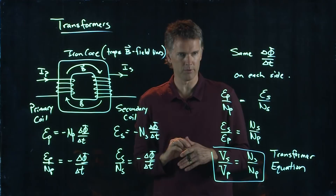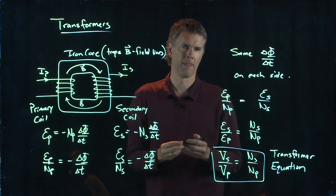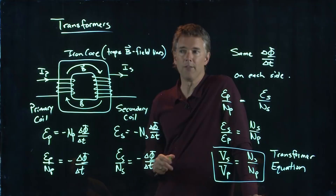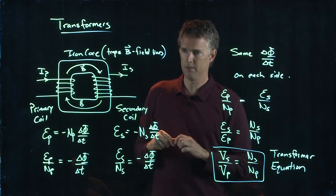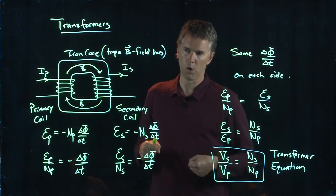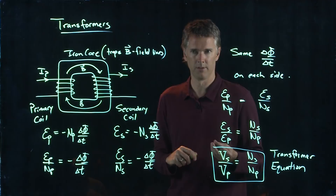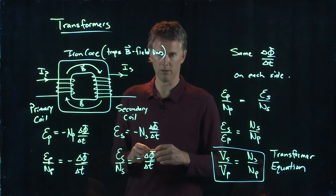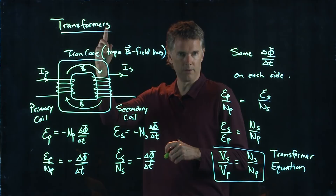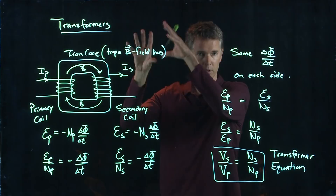Kilovolts can certainly kill you if there's enough current available. The voltages in power lines are high, then transformed down to lower voltages for your house. You see these transformers all the time — the big cans on telephone poles and high-voltage power lines are transformers, stepping the voltage down.